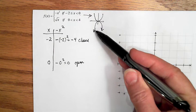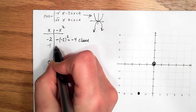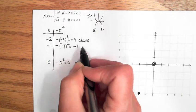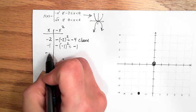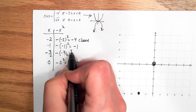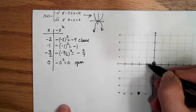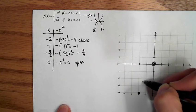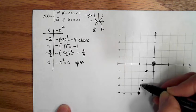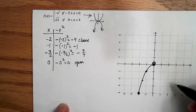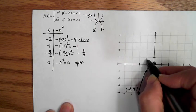We should get some ordered pairs for the curvature. At x = -1: -(-1)² = -1. At x = -3/2: -(-3/2)² = -9/4, which is 2 and a quarter below zero. Plot (-1, -1) and (-3/2, -9/4) to get the curve shape, forming the downward parabola from the closed endpoint (-2, -4) up to the open endpoint at the origin.